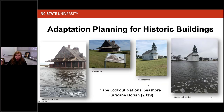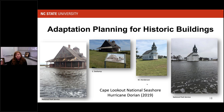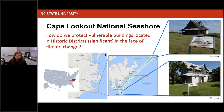Now I want to make this more concrete and bring you to Cape Lookout National Seashore, where I have been collaborating with lots of different researchers thinking about how to adapt and prioritize adaptation actions for buildings within two historic districts. These are images of already-receding floodwaters following Hurricane Dorian when it was safe enough to go and inventory Portsmouth Village following the event.